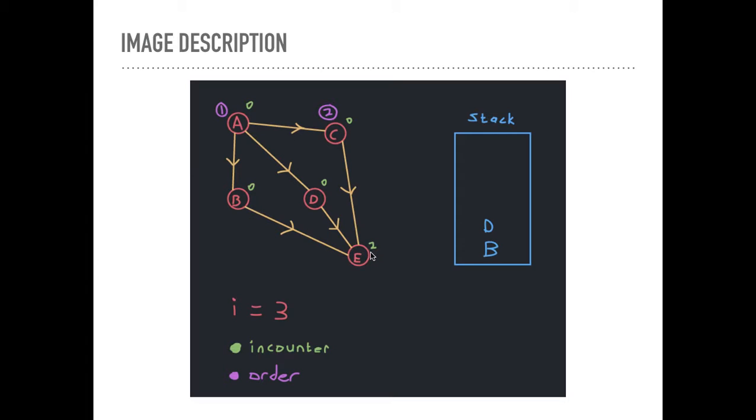And we say if the inCounter of this opposite vertex is 0, which it's not, push it. So it's not. We don't push it. That's the end of the while loop. And the condition is while S is not empty, well, it's still not empty. So we go to the next one.